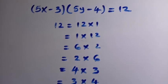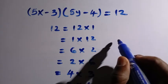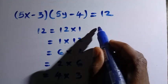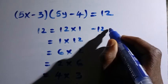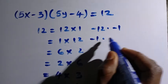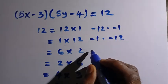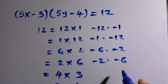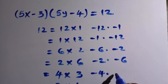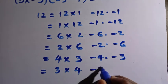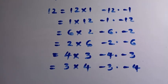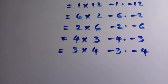We also consider the negative factor pairs: minus 12 times minus 1, minus 1 times minus 12, minus 6 times minus 2, minus 2 times minus 6, minus 4 times minus 3, and minus 3 times minus 4.